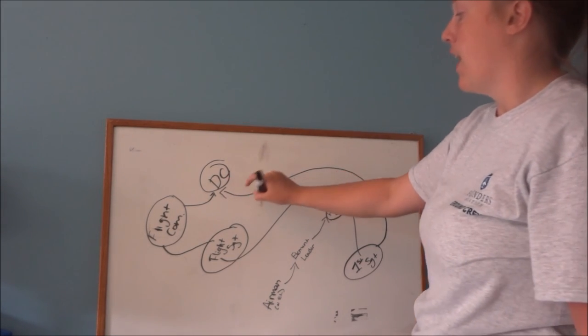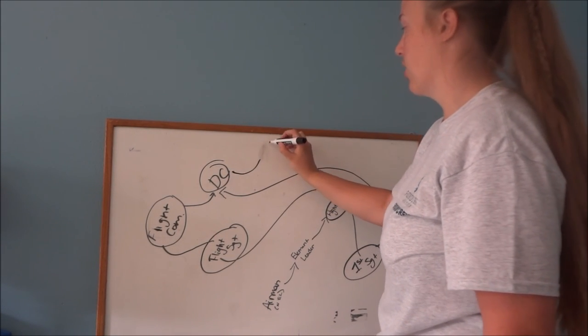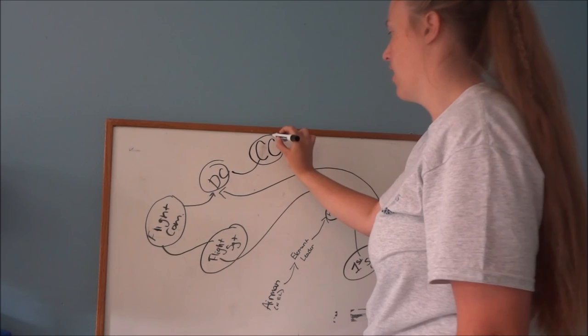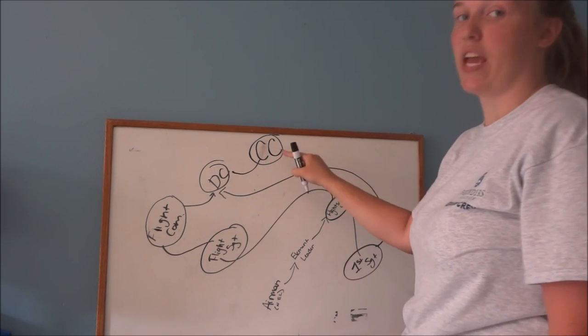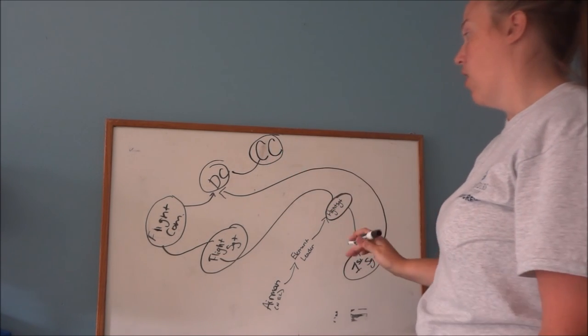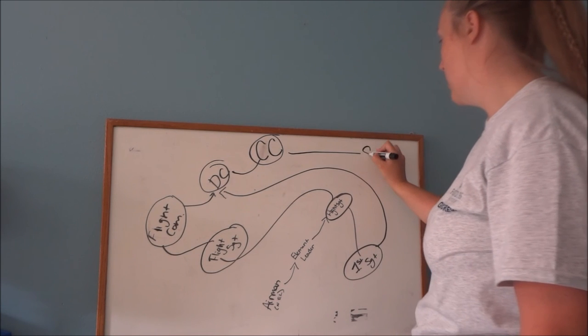Once it goes up to the deputy commander, it goes to the man in charge. Or the woman in charge. You get your cadet commander. This is the top of the cadet food chain. From there, it's going to go over to the seniors.